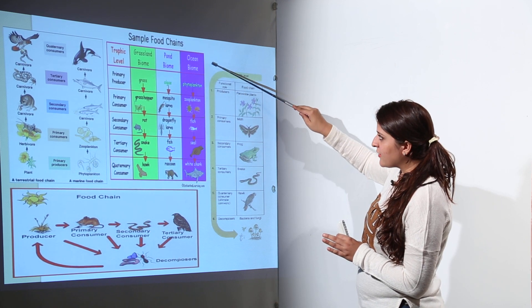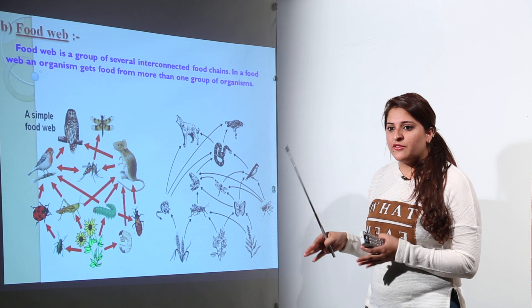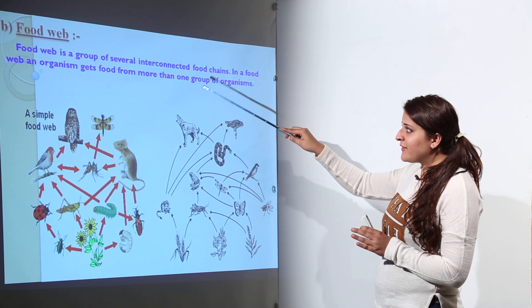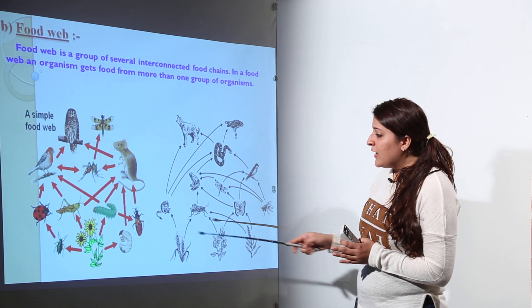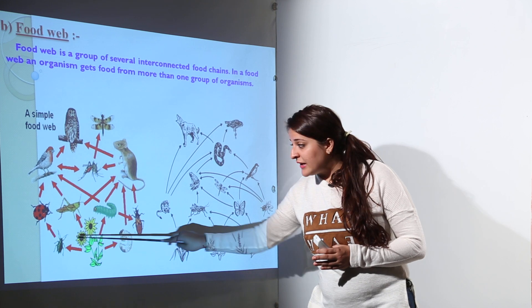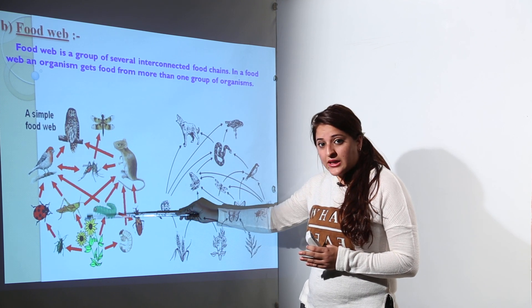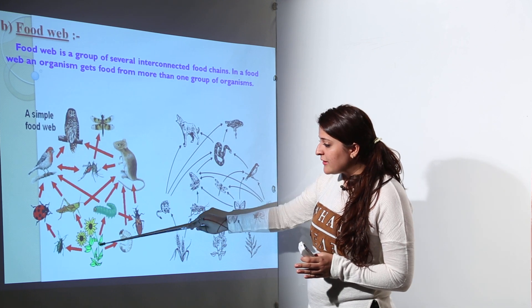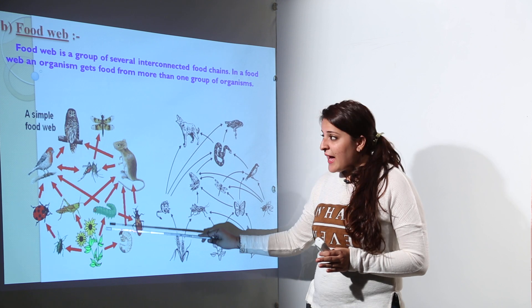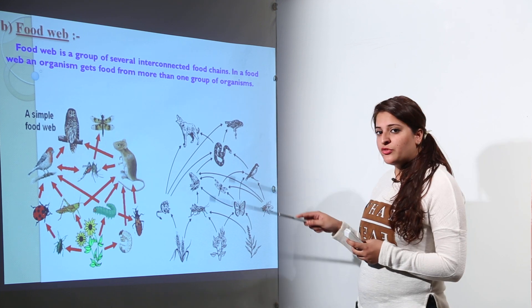A similar type of food chain persists in oceans. The next concept is food web. There is a difference between food chain and food web: a food chain is a linear flow of energy from one level to another, whereas a food web is an interconnection of various food chains. A plant can be eaten by various types of insects and other species, forming multiple food chains simultaneously — that is why we call it a food web.